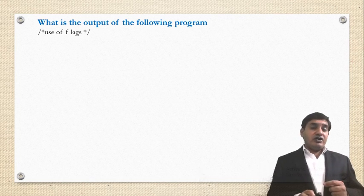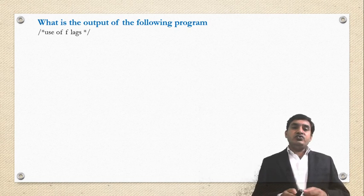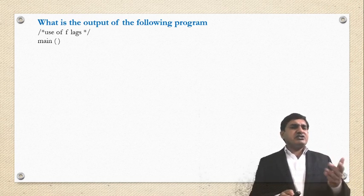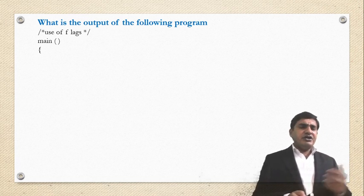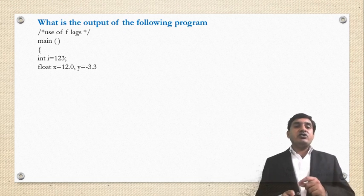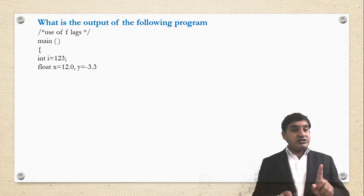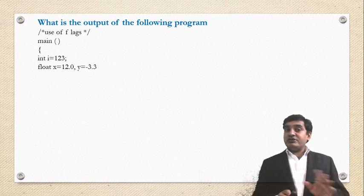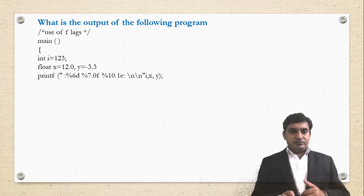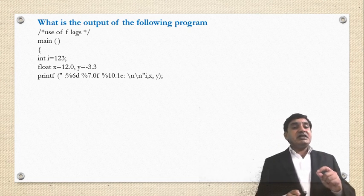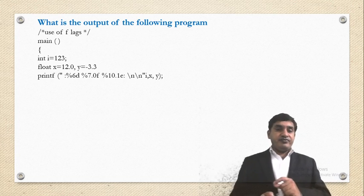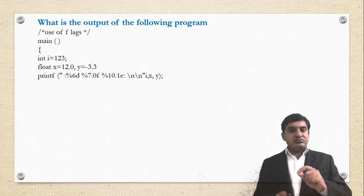What is the output of the following program? Main function — first a comment line, then the main function with opening curly bracket. Integer i = 1234, float x = 12.0, float y = -3.3. The printf function uses: %6d for i (width 6), %7.0f for x (width 7, 0 digits after decimal), and %10.1e for y (width 10, 1 digit after decimal, exponential form).